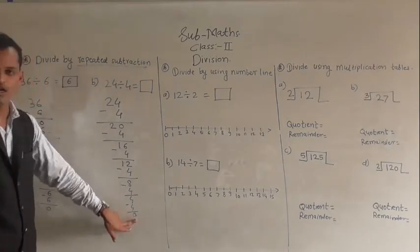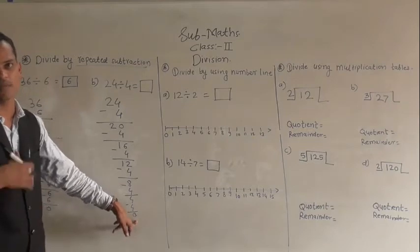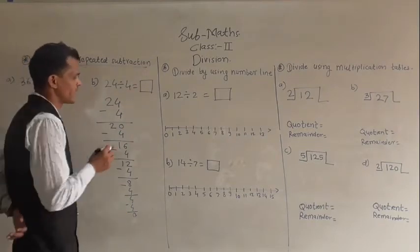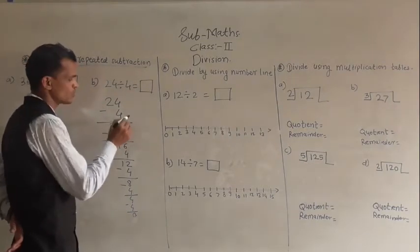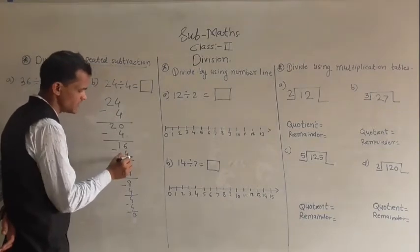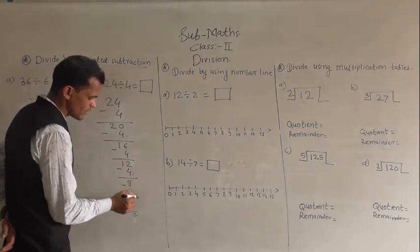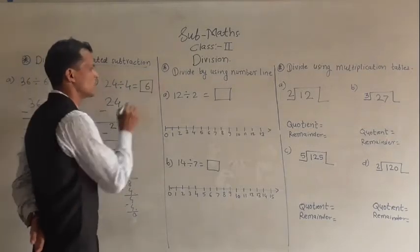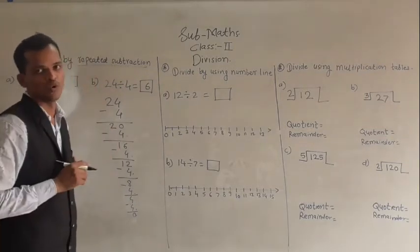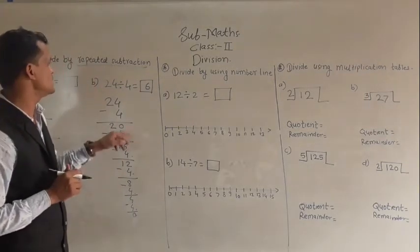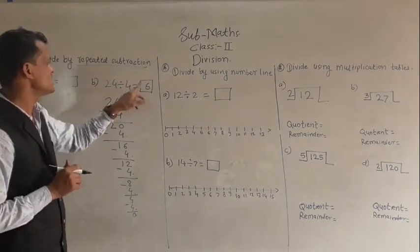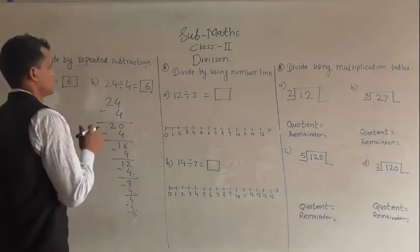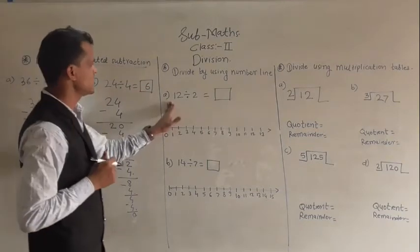When 0 comes, stop your process and count how many times you subtracted 4: 1, 2, 3, 4, 5, and 6 times. So 6 is our answer. You can cross-check: 4 sixes are 24, so our answer is correct.